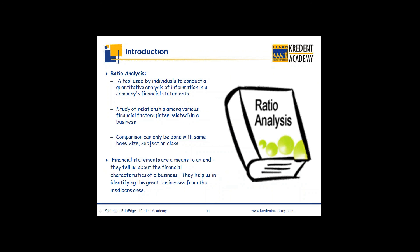Ratio analysis, as the name defines, is the analysis of ratios — with one numerator and one denominator. It is the study of relationships among various financial factors. The numerator and denominator can both come from the profit and loss account, both from the balance sheet, or one from the balance sheet and one from the cash flow — there are many permutations and combinations that can be done.